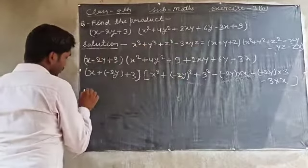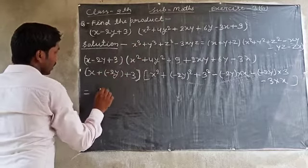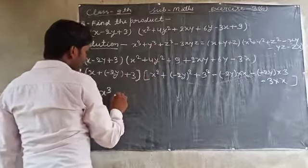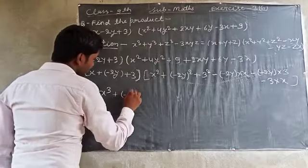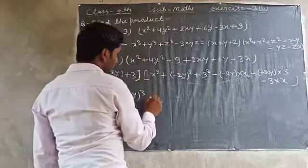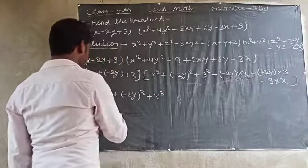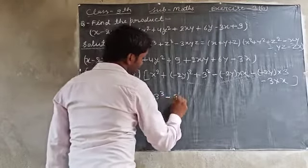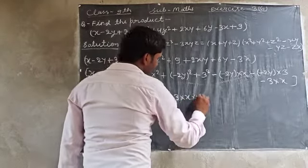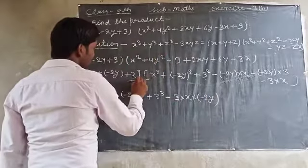We now put the values into the left-hand side of the formula. In place of x we put x, so we get x³. In place of y we put (−2y), giving (−2y)³. In place of z we put 3, giving 3³. Then minus 3 times x times (−2y) times 3.